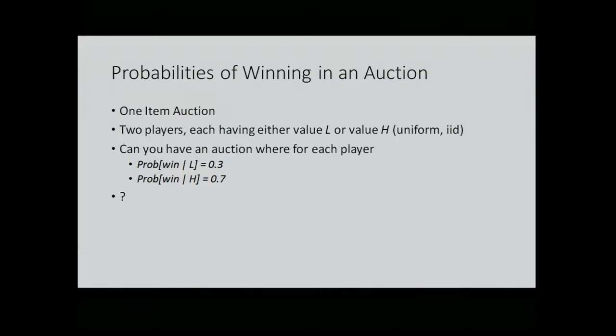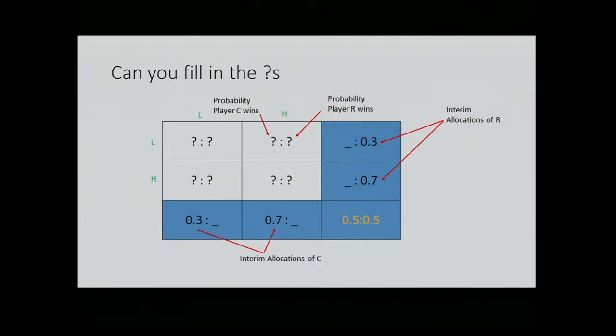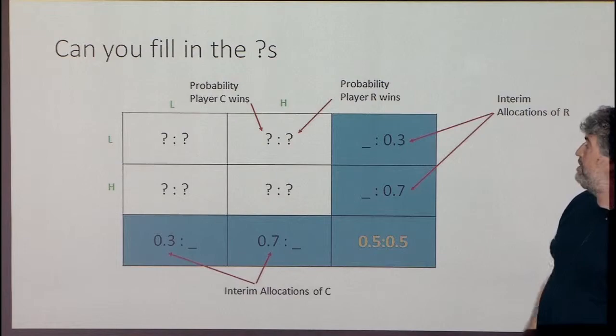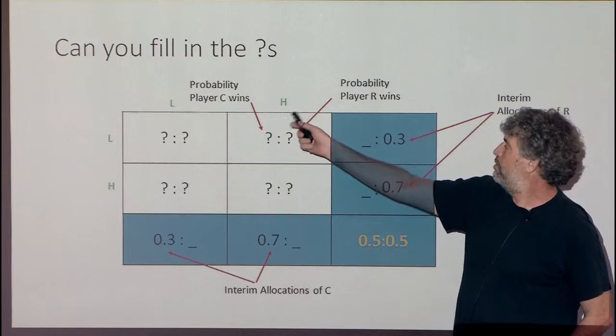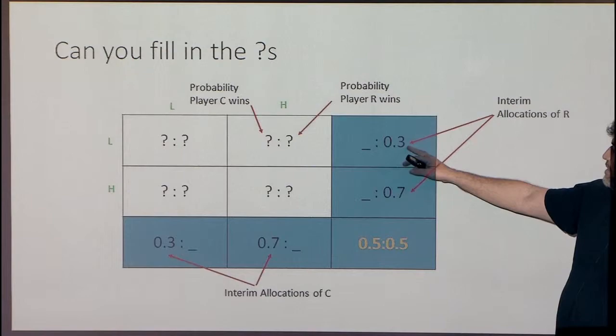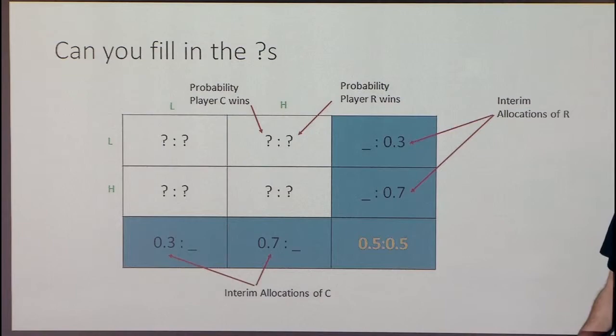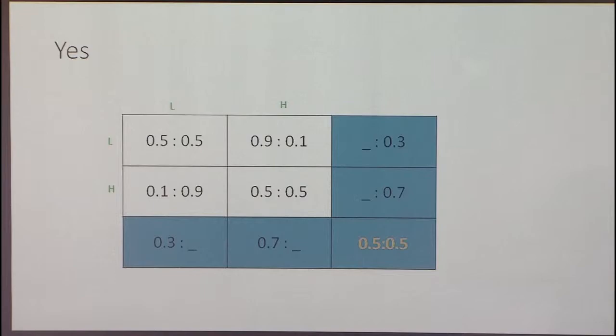Can you do that? We need to fill in probabilities for any combination of the values of the players — what is the probability the first guy wins, what is the probability the second guy wins. The sum of these two has to be one. Assuming uniform equal probability for L and H, the total probability that the row player wins 0.3 has to be the average of two numbers. So can you fill the question marks to get these averages? The answer is yes, you can — here's one solution.